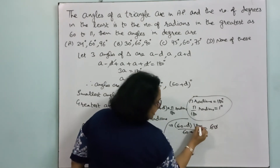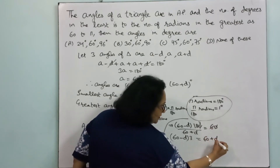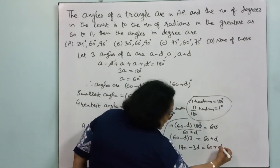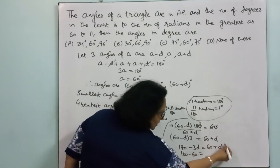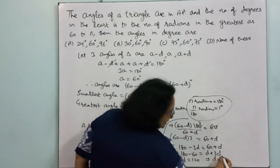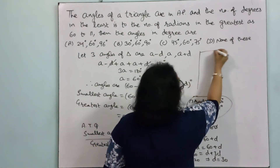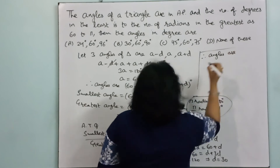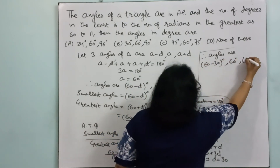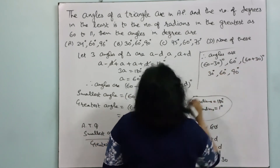Simplifying: 180 divided by 60 gives 3, so (60 − d) × 3 = 60 + d. Expanding the bracket: 180 − 3d = 60 + d. Therefore 180 − 60 = 3d + d, which gives 4d = 120, so d = 30. Therefore the angles are: 60 − 30 = 30 degrees, 60 degrees, and 60 + 30 = 90 degrees. That is option B.